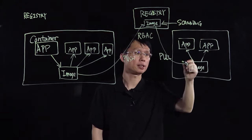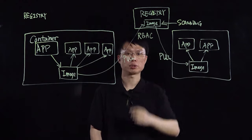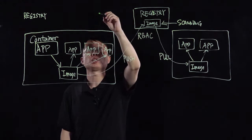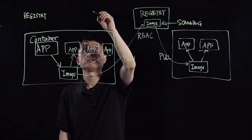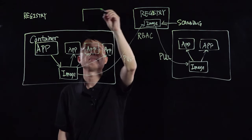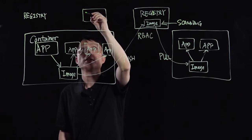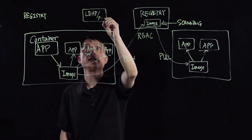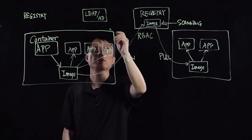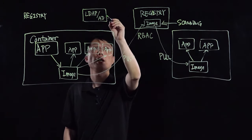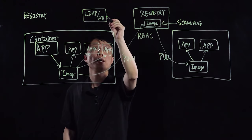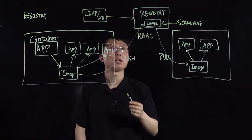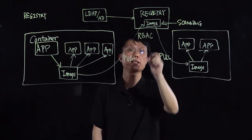They only have pull access from the registry. In addition, most organizations have a central user management system such as LDAP or AD for Active Directory, and the user identity can be linked directly into a registry and then used for role-based access control.